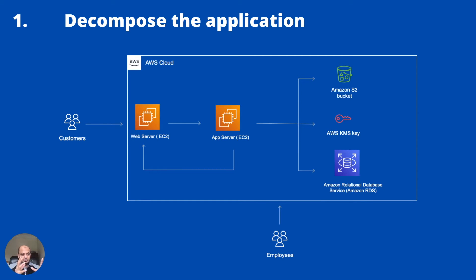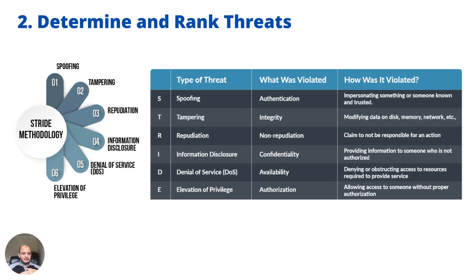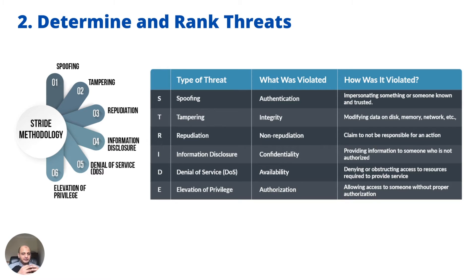Now we think about what can go wrong from a threat perspective — this is where the real power of threat modeling comes in. The great thing is there are many methodologies already available. One of the most universally used is called STRIDE, created by Microsoft. It covers six main threat categories: Spoofing, Tampering, Repudiation, Information Disclosure, Denial of Service, and Elevation of Privilege.